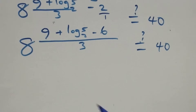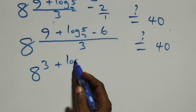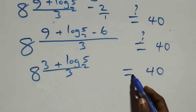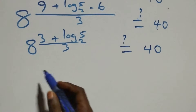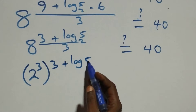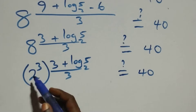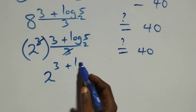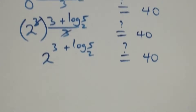Simplifying 9 minus 6 gives 3, so we have 8 raised to power 3 plus log 5 base 2 over 3. Expressing 8 as 2 cubed — that is 2 cubed raised to power 3 plus log 5 base 2 over 3 — the 3s cancel, leaving 2 raised to power 3 plus log 5 base 2.